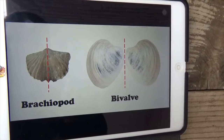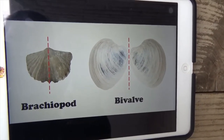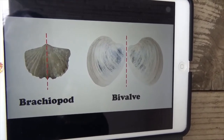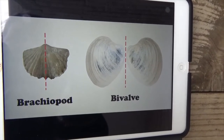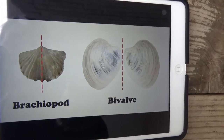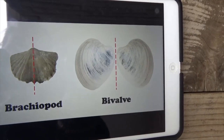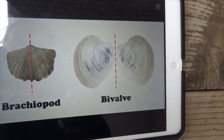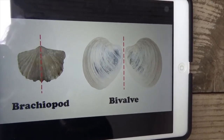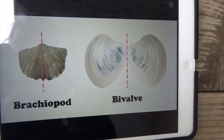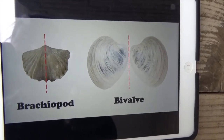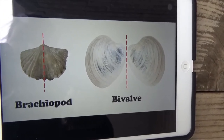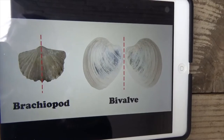I'm showing you a diagram on my iPad of the planes of symmetry that can be found on the shells of bivalves versus brachiopods. As you can see, the plane of symmetry cuts the bivalve on the right right in half between the two shells, so one shell is identical to the other. Whereas on a brachiopod, the plane of symmetry runs right down the middle of the shell, so its symmetry is right and left, while the lower shell or bottom half may be completely different in structure and shape.